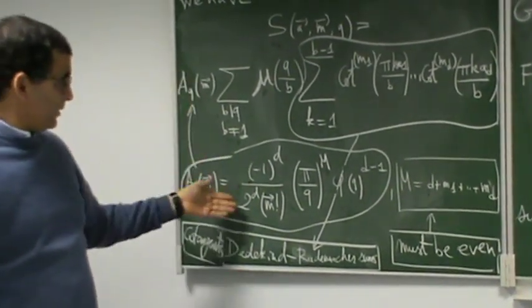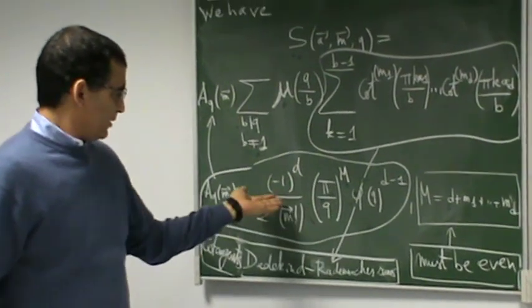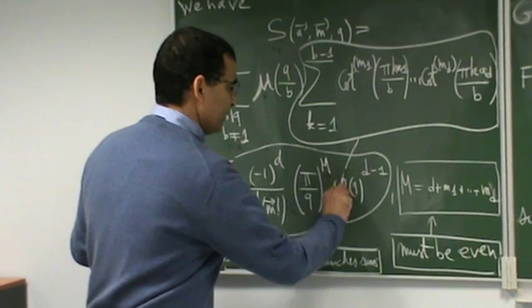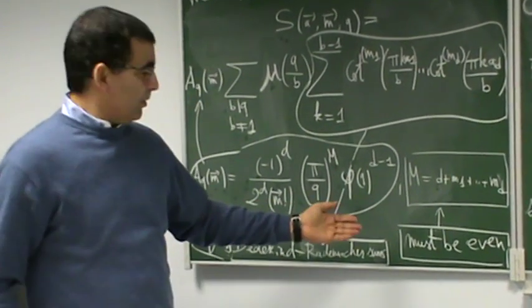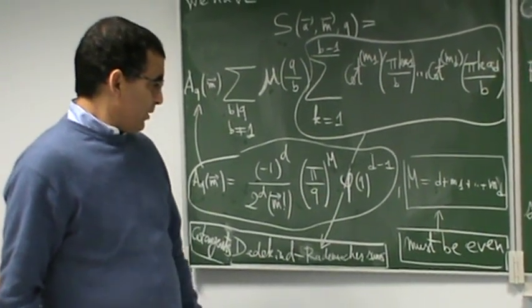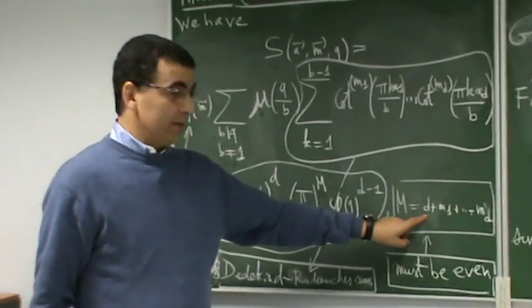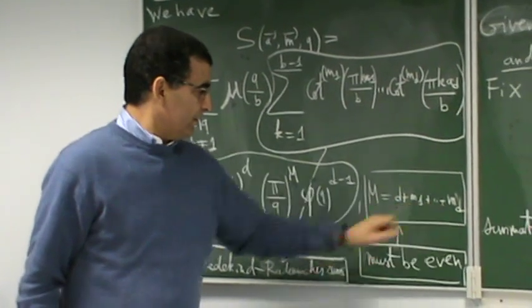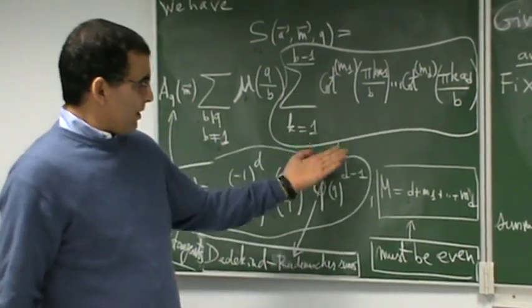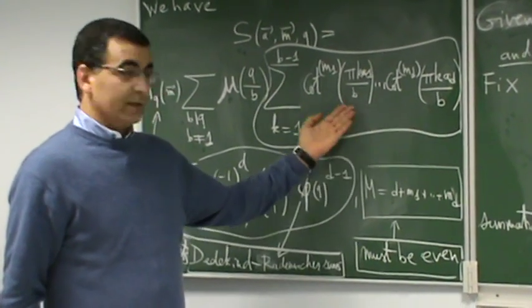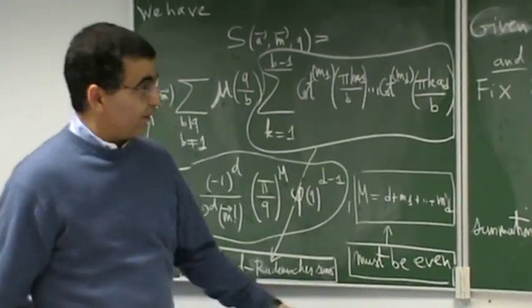This quantity is defined by this formula which involves here phi Q, phi Q is the Euler function at Q and the constant here capital M is only D plus M1 to MD and in our case here capital M must be even otherwise this quantity is zero.